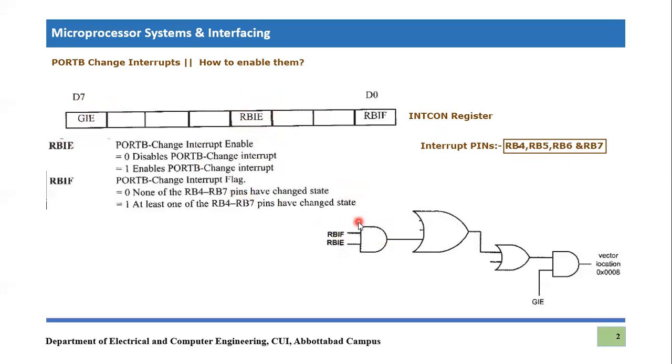So look, this is the AND gate for Port B change interrupts. One input is RBIF which is interrupt flag of Port B change and other input is RBIE which is interrupt enable of Port B interrupt. So if we have made, let's consider we have made GIE equals to 1. GIE is equal to 1 and RBIE is equal to 1.